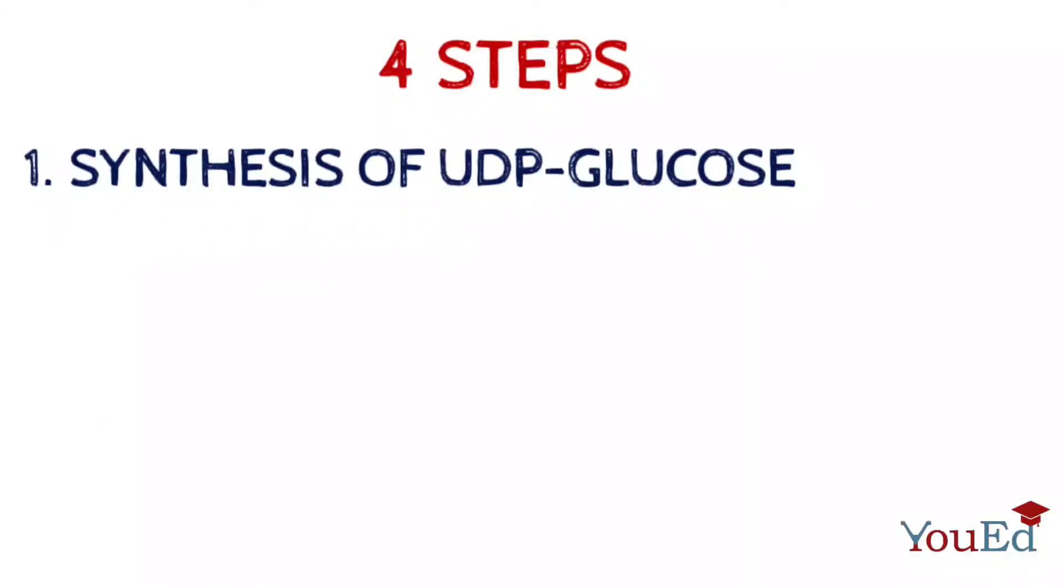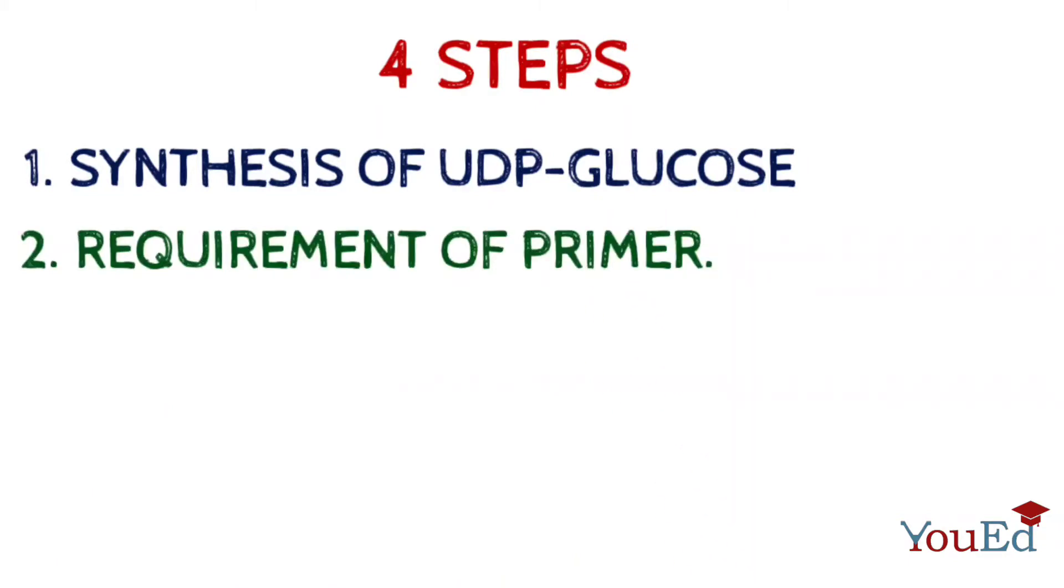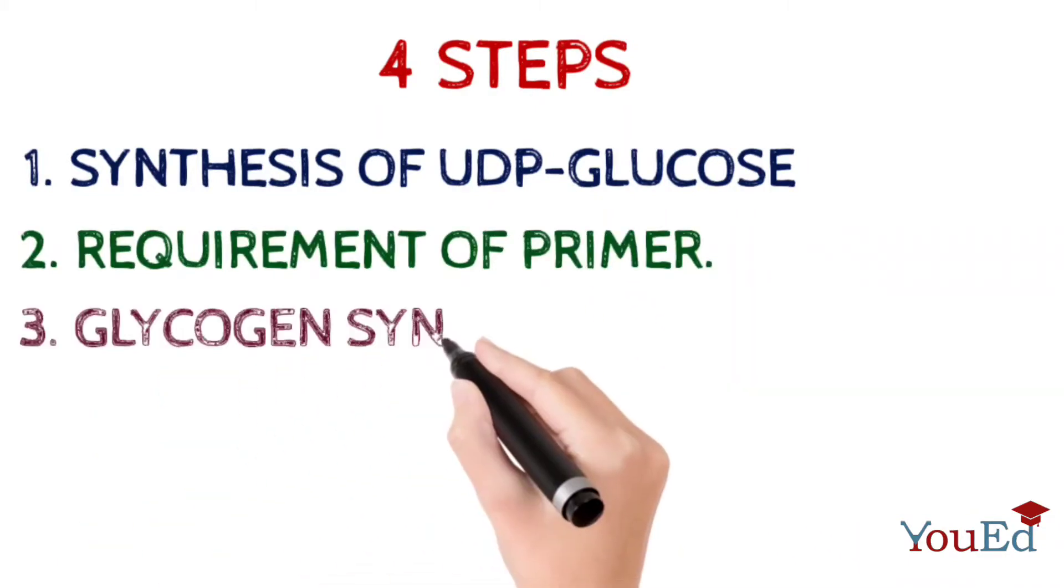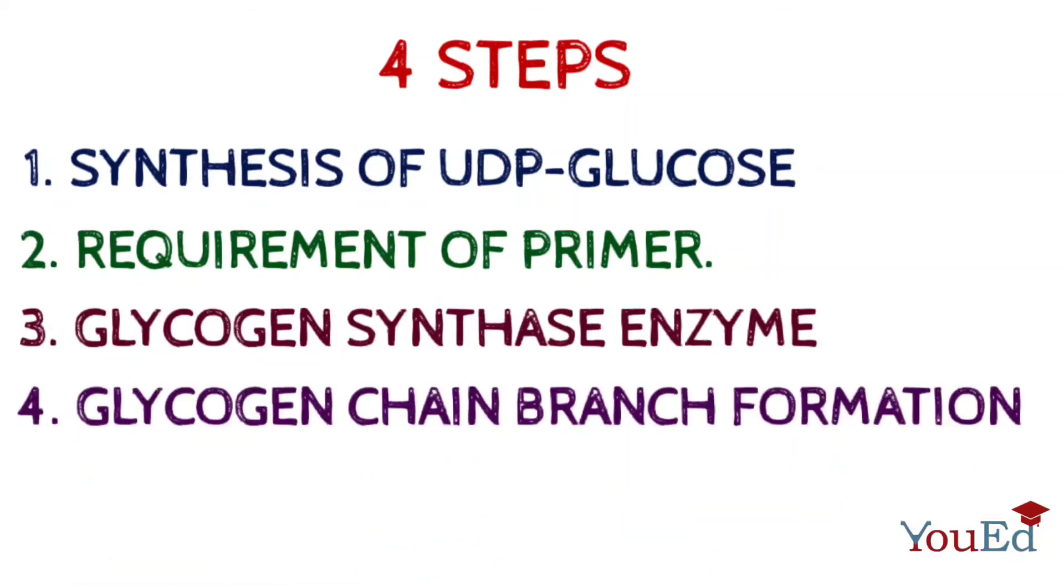There are four steps of glycogenesis reactions. The first one is the synthesis of UDP-glucose. Second is requirement of a primer to initiate glycogenesis. Third is glycogen synthesis by the enzyme glycogen synthase. And the last step is formation of branches in the glycogen chain.